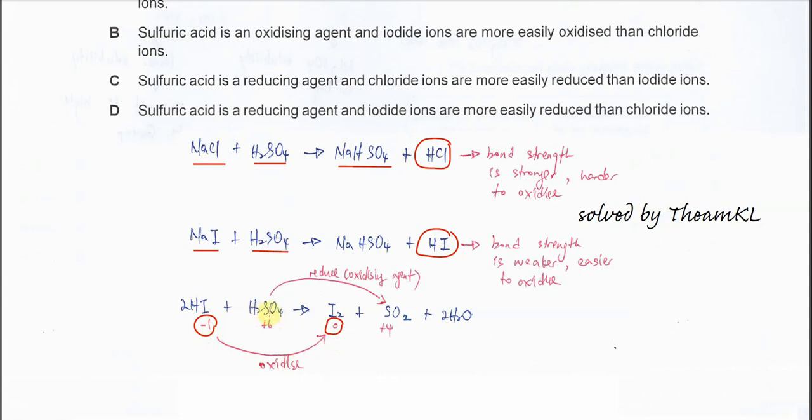For H2SO4, we know that the oxidation number of sulfur is reduced from positive 6 to positive 4. So H2SO4 now undergoes reduction.